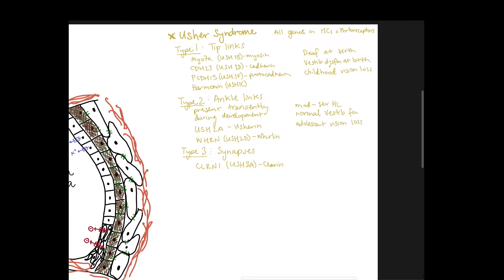And type 3, the synapses, results in late onset hearing loss, late onset vestibular function, and again adolescent vision loss. Overall, the underlying pathophysiology is that there's eventual loss of the hair cells and rods and cones. These patients get a peripheral vision loss first, and then ultimately end up with this tunnel vision phenotype.